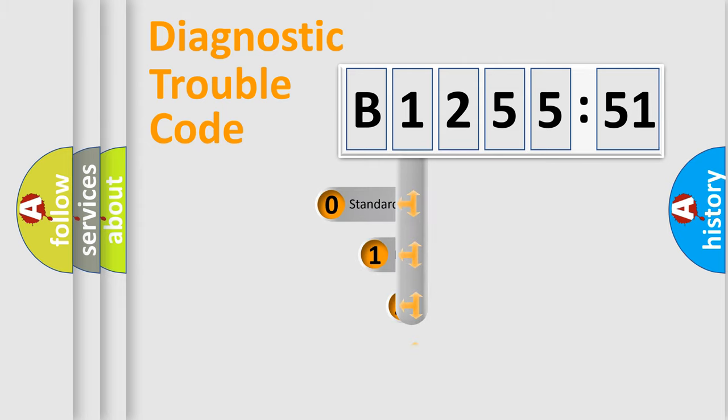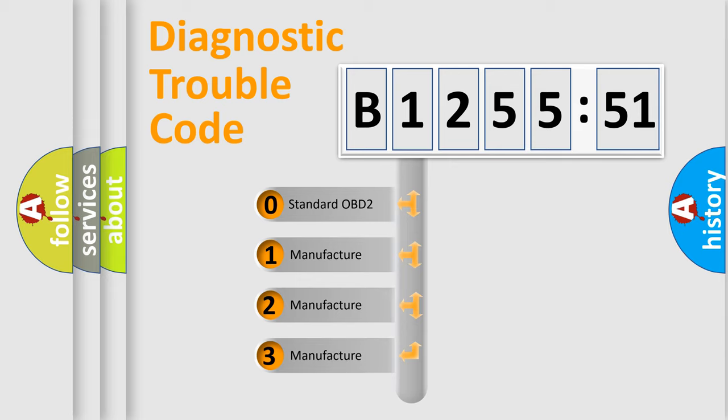Powertrain, Body, Chassis, Network. This distribution is defined in the first character code.